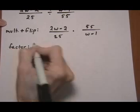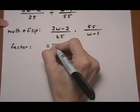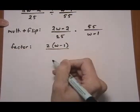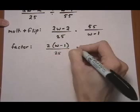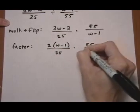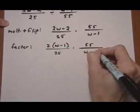So factoring, pull out greatest common factor of 2 on the top one there and leave 25 as it is. Leave 55 and leave the w minus 1.